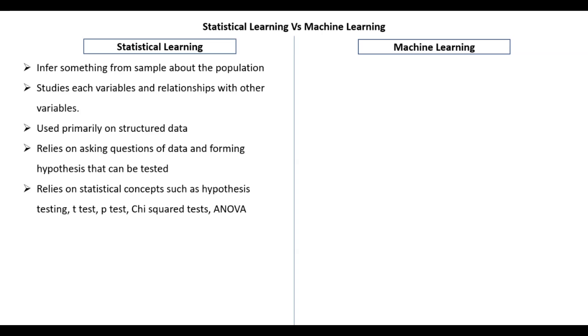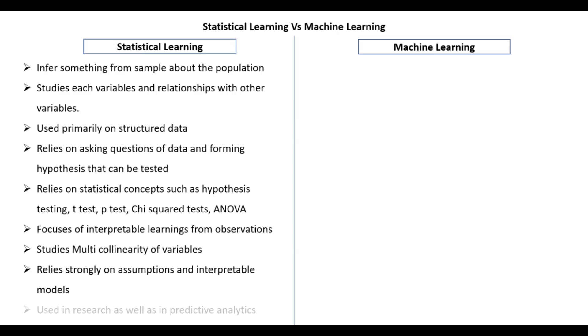It focuses on interpretable learning from the observations. So the main key of statistical analysis is to get key assumptions, to form key assumptions and to find out whatever we can interpret from our observations or our model that we try to form. Statistical analysis also studies multi-collinearity of the variables or the independent variables and whether they are related with each other and it relies strongly on assumptions and the models are highly interpretable. So when we say interpretable, you can actually find out why the model is generating the results or the predictions that it is making. Since we use statistics, we try to find out the explanation for everything that the model is probably predicting. It is also used a lot in research as well as in predictive analytics.